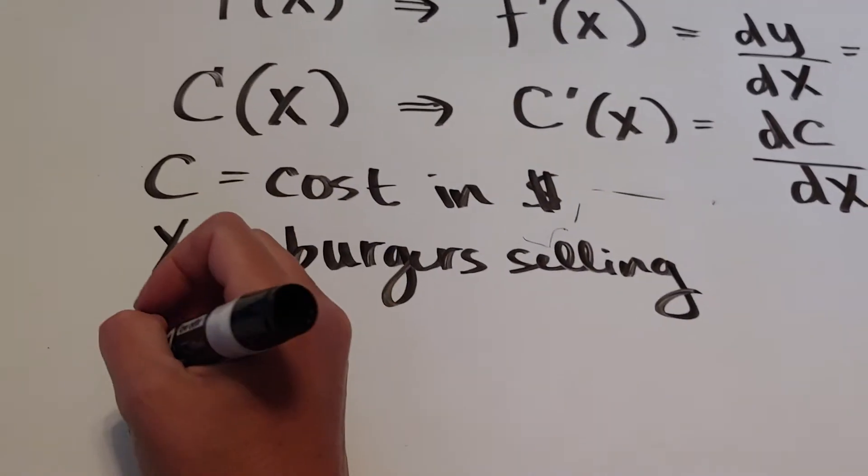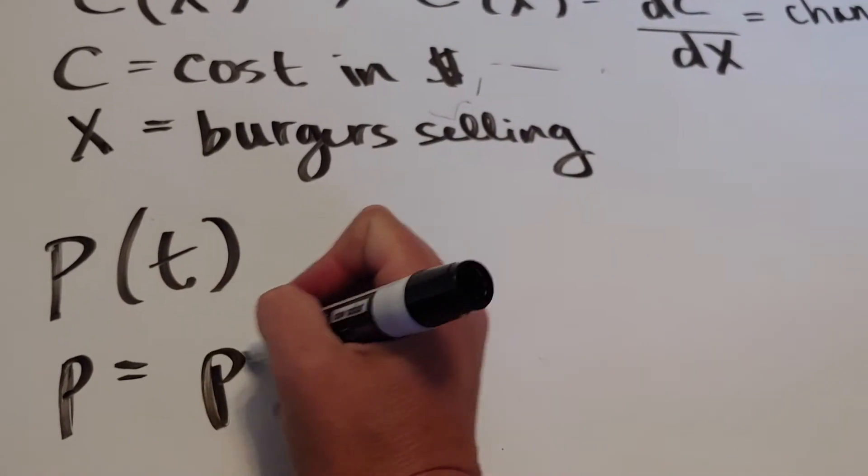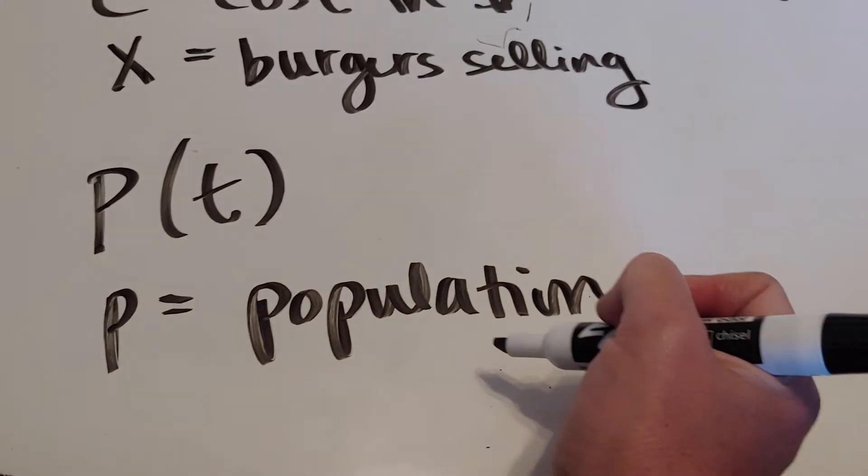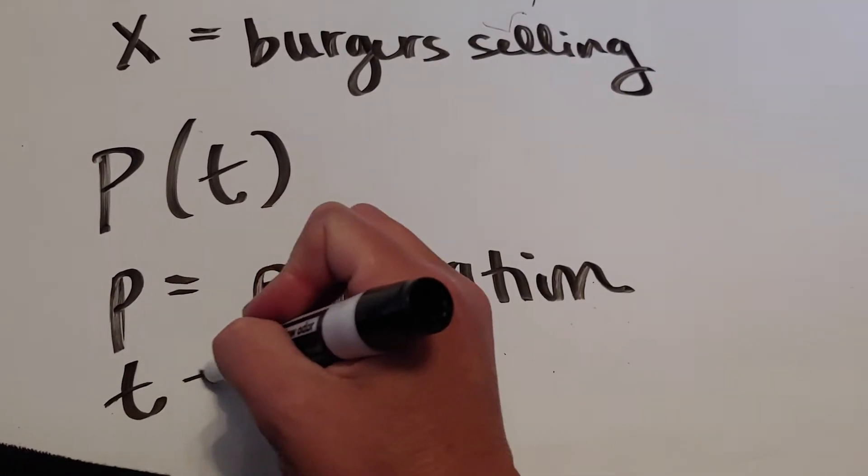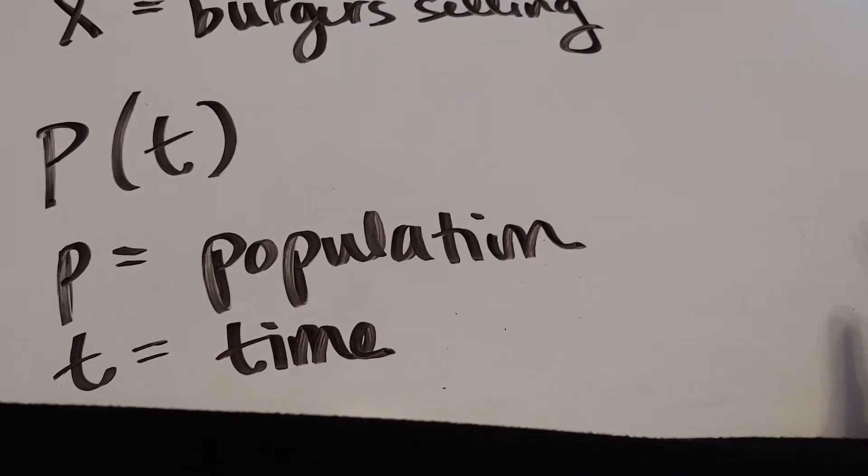What if I had population over time? So p is the population, and that could be of a city, a state, a bacteria, whatever it is that you're looking at. And t is time, and that time could be measured in days, years, seconds. It just depends.